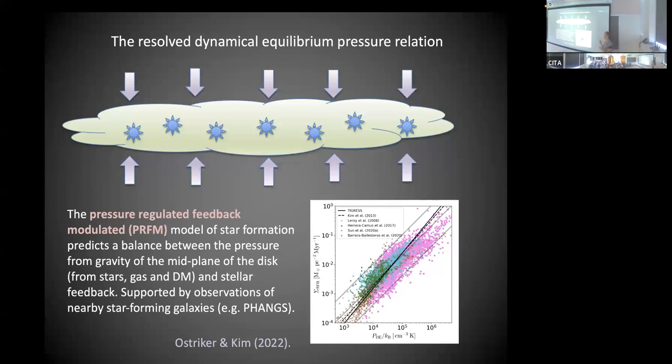The simple qualitative idea is that if you take the midplane of a galactic disk in equilibrium, the pressure felt in the disk - the combination of pressure from the dark matter component, the stellar component, and the gas self-gravity - has to be balanced by something. In this model, it's balanced by feedback from the stars in the disk. In that case, we expect a relationship between how much star formation you have, because that's producing the outward force, and the pressure you have in the disk. This has been predicted both analytically and from simulations.